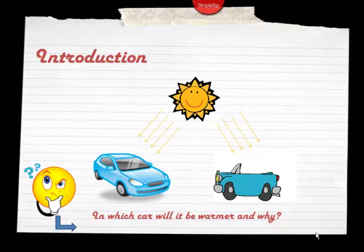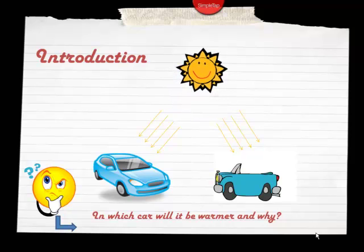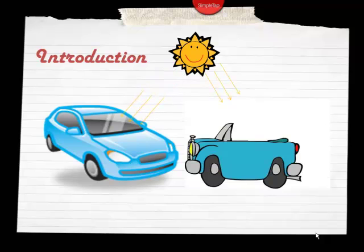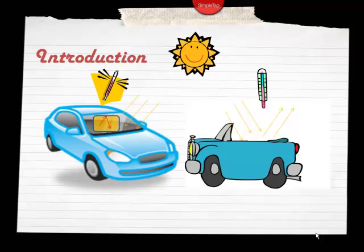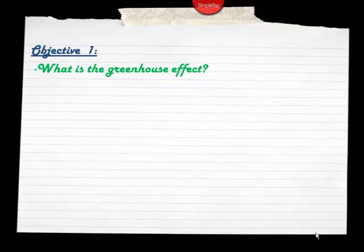So which car will be warmer, and more importantly, why? In Jasmine's car, sun rays go through the window and normally some would be reflected back, but since the windows are closed, a lot of the heat is trapped inside and the temperature goes up. In Sam's car, sun rays also come in, but there's plenty of room for those rays to escape — there is no roof and no closed windows.